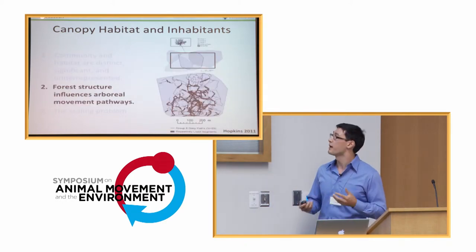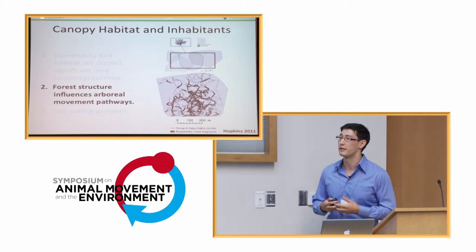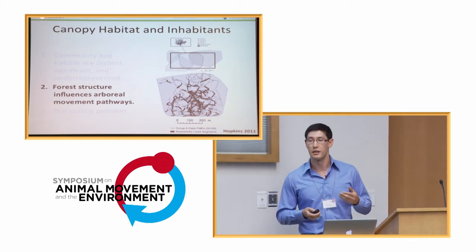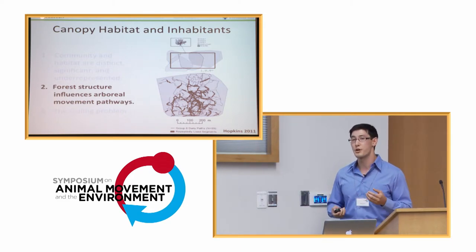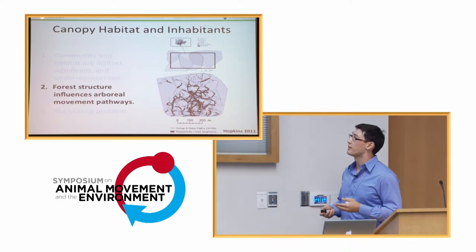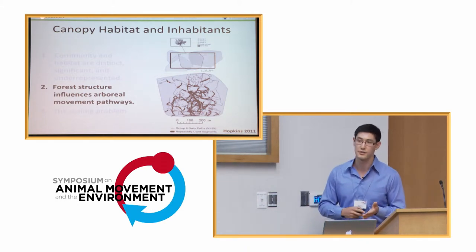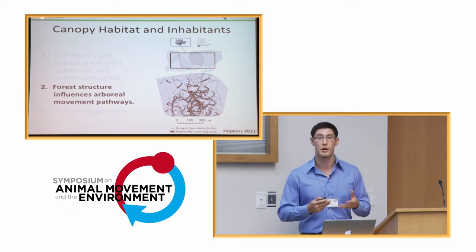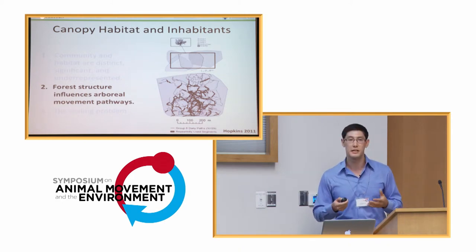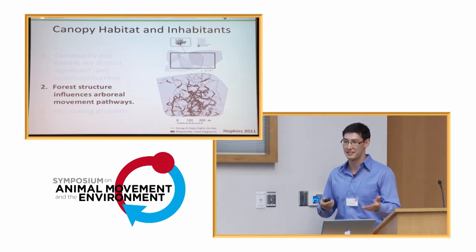Another thing that became evident is that forest structure really does matter in terms of determining where animals are likely to go. The most extensive study of this was done by Mariah Hopkins in a paper from 2011. She showed that pathways used and reused over time by howler monkeys were affected by the location of food resources, the topography of the landscape, as well as the structure measured at different height classes in the forest. This makes intuitive sense — if you're going to move through an environment with limited substrate, you have to move on something that exists.